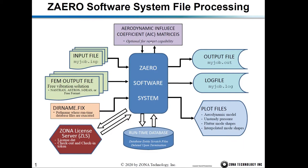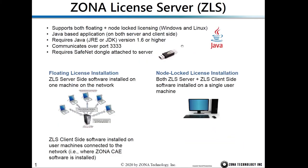During the run, you can output the aerodynamic influence coefficient matrices and retrieve the AIC matrices. On the output side, you have the output file, a log file that documents the CPU time of each module, and you can generate plot files. You can view the aerodynamic model, display the unsteady pressures, look at the flutter mode shape, and view the interpolated mode shape on the aerodynamic panel model. The ZAERO license server is called ZLS and it supports both floating and node-lock licensing on both Windows and Linux.